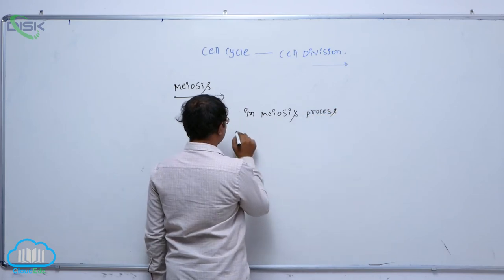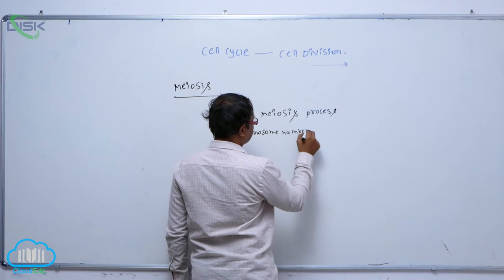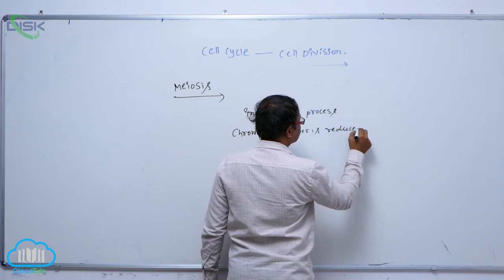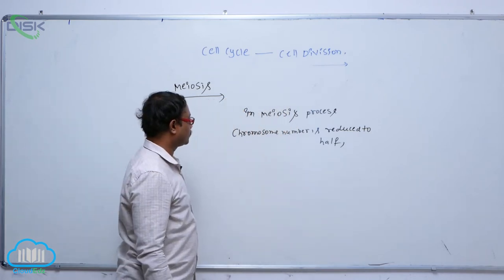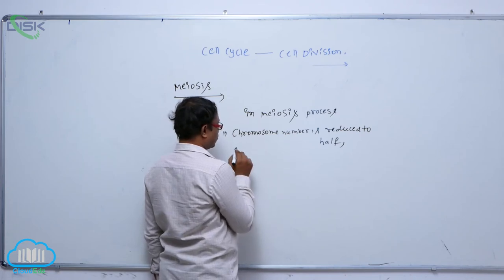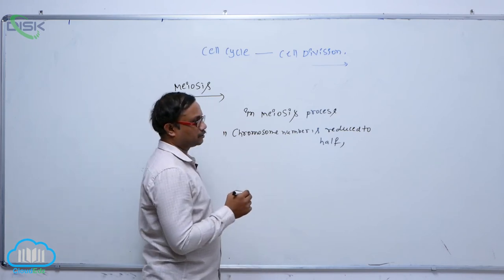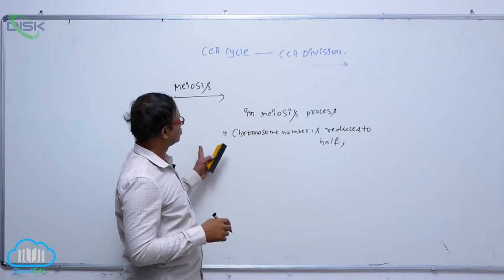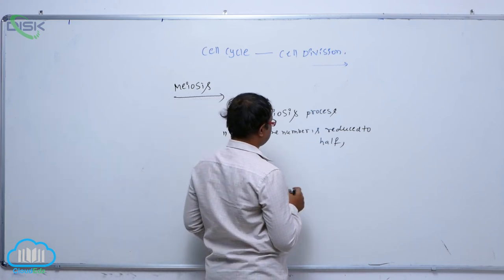In meiosis, the haploid chromosome number is reduced to half. That is the meiosis process. For example, diploid cells produce haploid cells that are not identical to the parental cells. This occurs in the meiosis process.